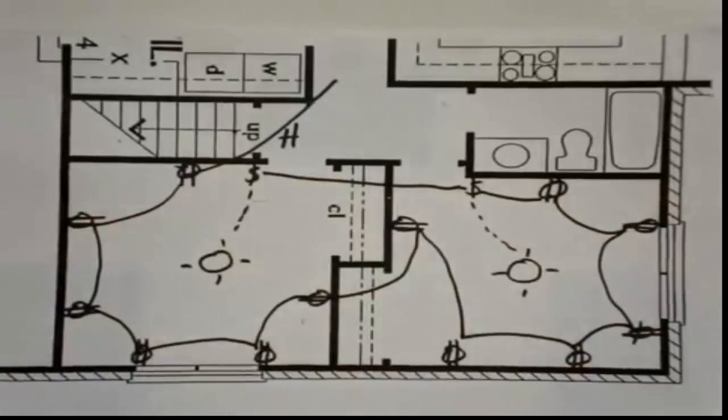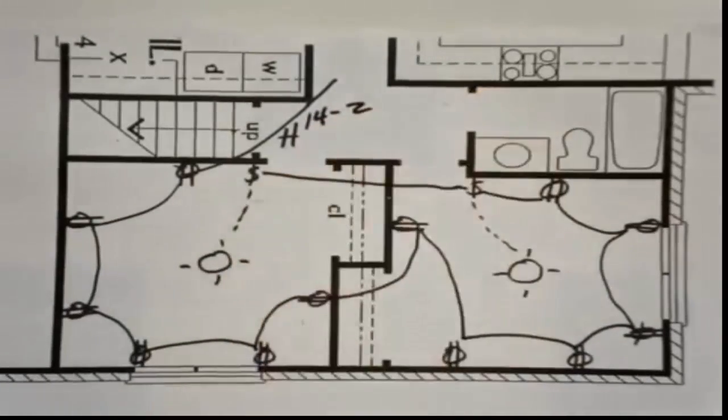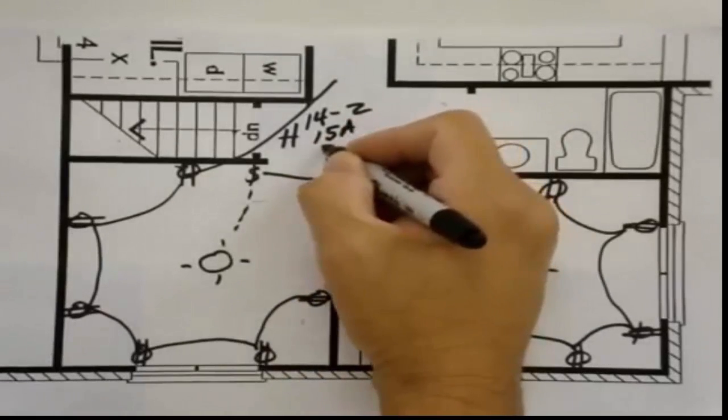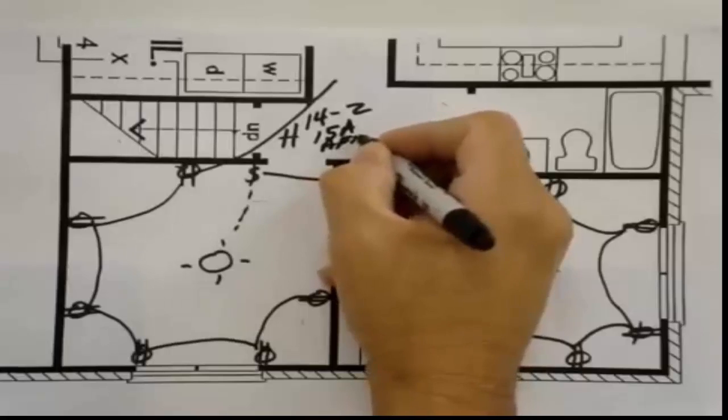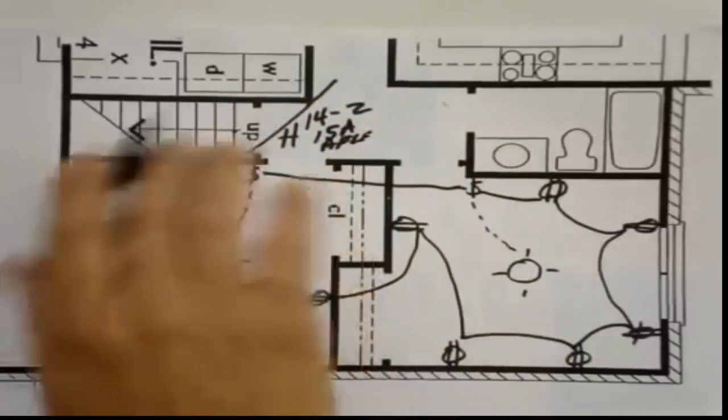All a continuous run. A home run is going to be with a 14-2 with a 15 amp breaker. An arc fault breaker. And we'll get into that in the wiring and the breakers for that in our other segment.